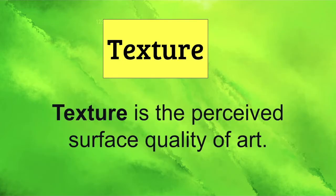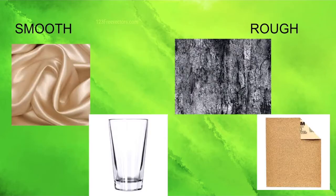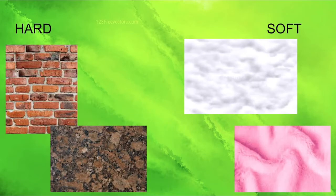Our next technical element is texture. Texture is the perceived surface quality of art. Smooth versus rough. Like the silk and the glass, the smooth glass compared to the roughness of the bark or the sandpaper. Hard versus soft. Like brick and granite. It's hard. It's rough.